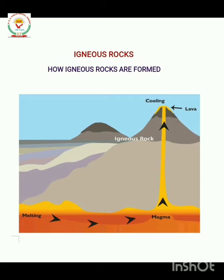The first type of rock is igneous rocks. What is the formation of igneous rocks? Igneous rocks can be formed by two ways. The first way is: as you can see in the image, the molten rocks — molten means 'pigla hua' — called magma, which is present deep within the Earth, got trapped in small pockets.